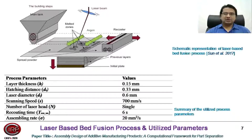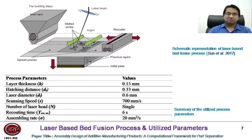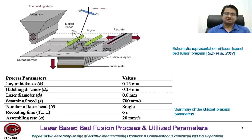A schematic representation of the laser-based bed fusion process is shown here. The mean tank containing powder material spreads a thin layer of material for printing, and the laser beam supplies energy to sinter the material in the printing zone. After printing a layer, the initial plate goes down to leave place for the next layer. There are six major parameters to estimate build time: layer thickness, hatching distance, laser diameter, scanning speed, number of laser heads, and recoating time.